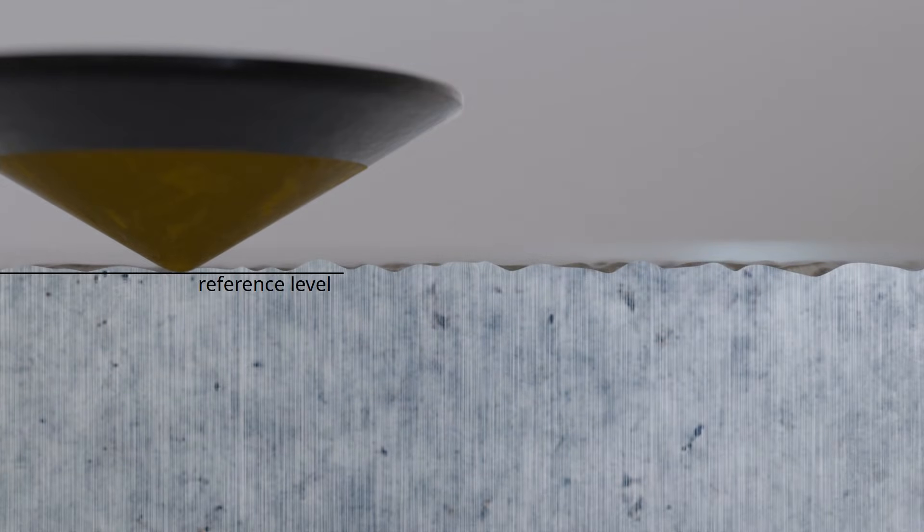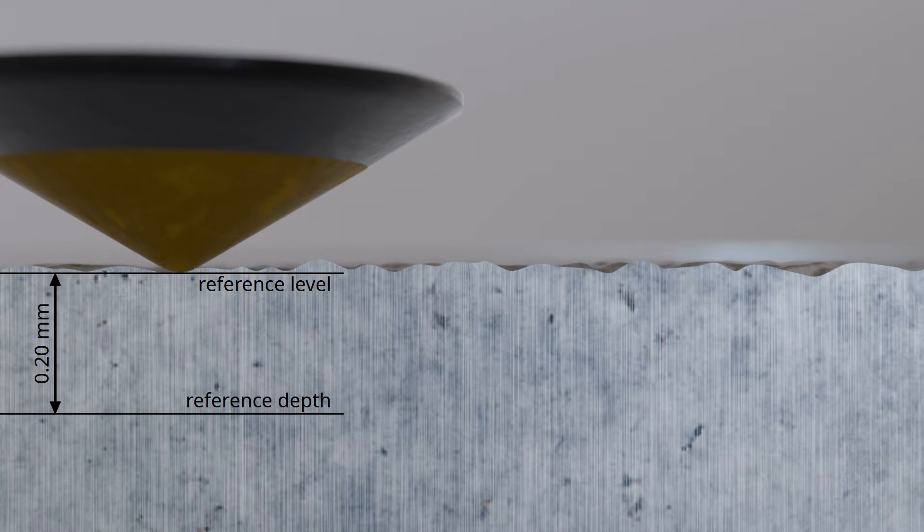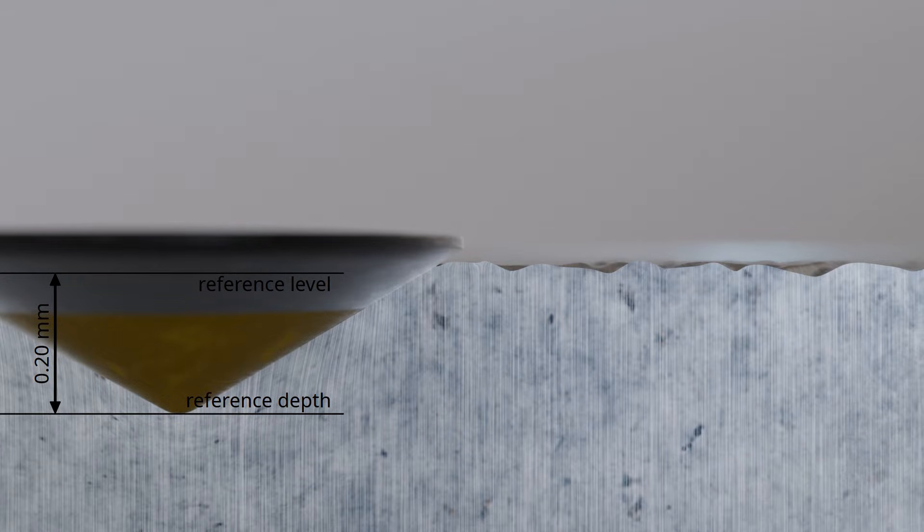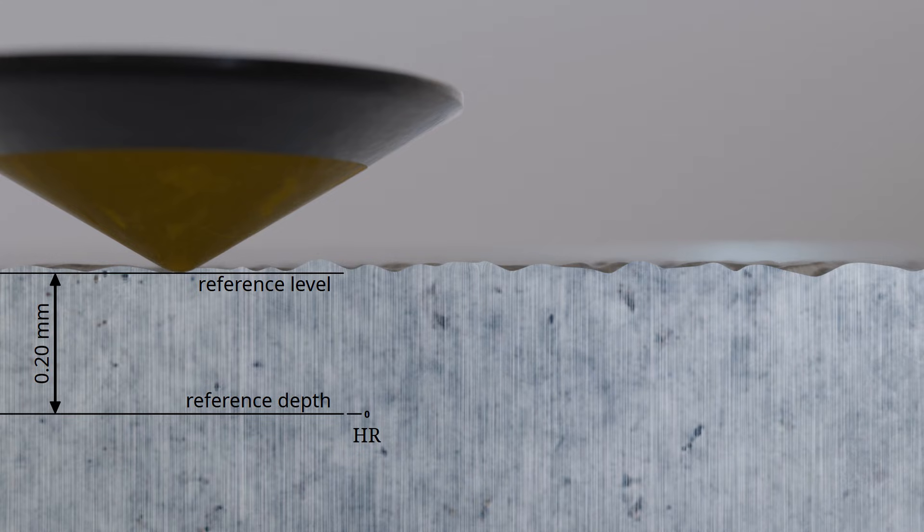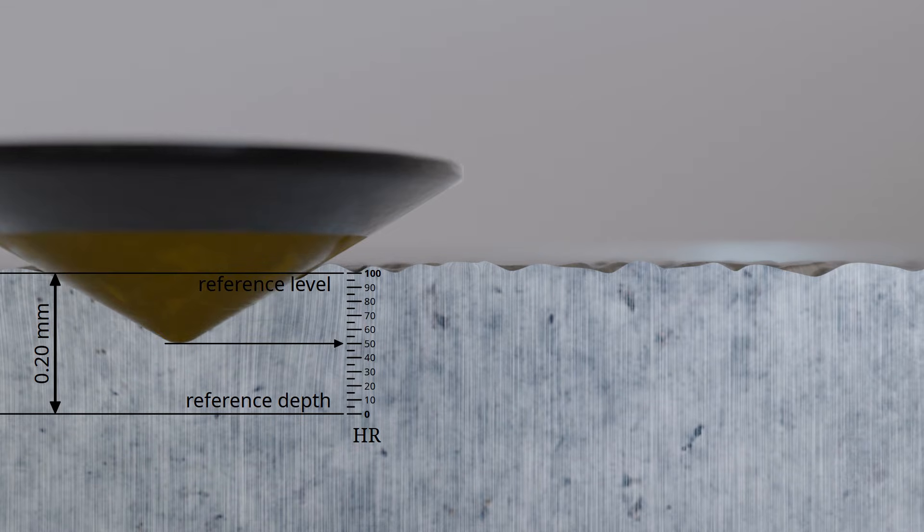When diamond cones are used as indenters, the hardness value is determined based on a reference depth of 0.2 mm. The hardness value assigned to the material depends on how close the indenter comes to this reference depth. Full penetration of the indenter to the reference depth would indicate that the material is very soft, corresponding to a hardness value of 0. On the other hand, if the diamond cone does not penetrate the material at all, it would indicate an extremely hard material, which would be assigned the maximum hardness value of 100. The scale is evenly divided in increments of 2 micrometers, so reaching half of the reference depth corresponds to half of the maximum hardness value. In this case, the material would have a Rockwell hardness value of 50.